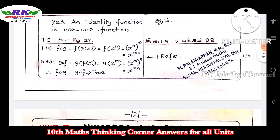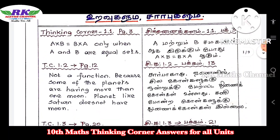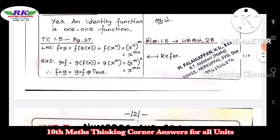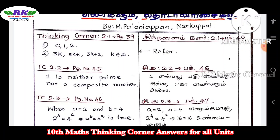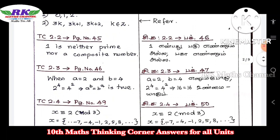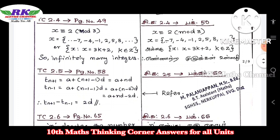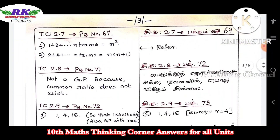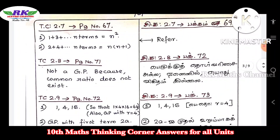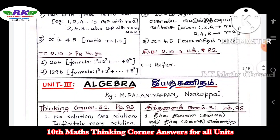If you want to refer to different page numbers, you can navigate to them. Next, the second chapter, Numbers and Sequence: page number 39, 45, 46, 49, 58, 65, 67, 71, 72, and page number 80.